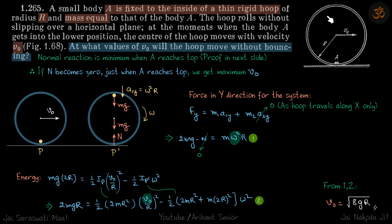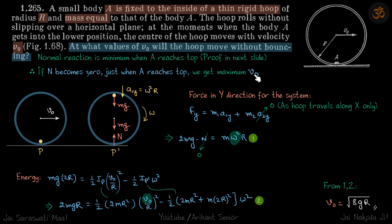The value of omega will be obtained from energy conservation. Therefore, the normal reaction is minimum when A reaches the top. If N becomes zero just when A reaches the top, we get the maximum value of v₀.